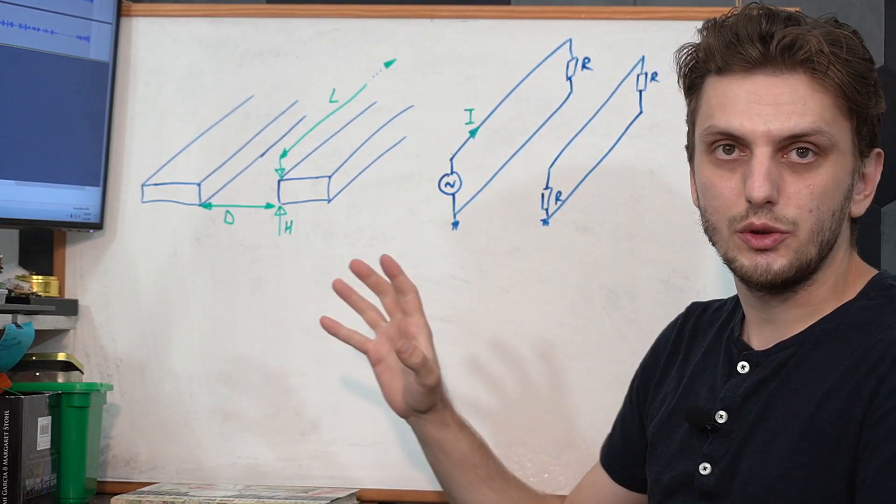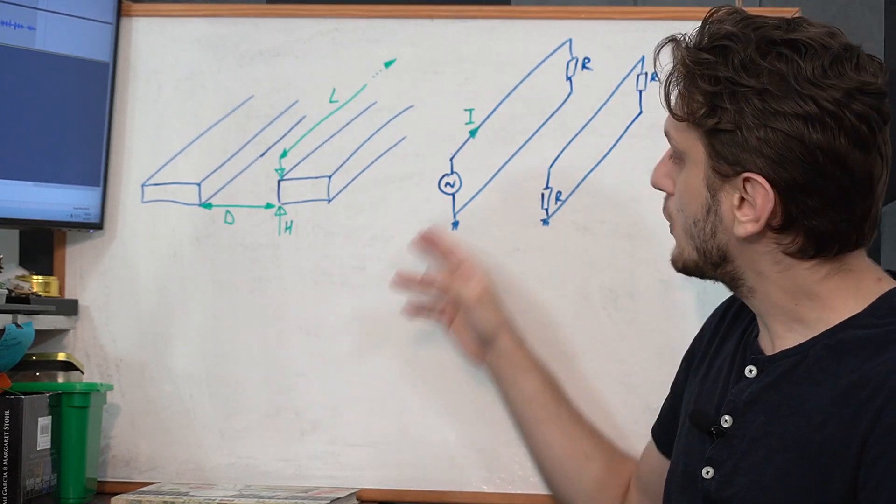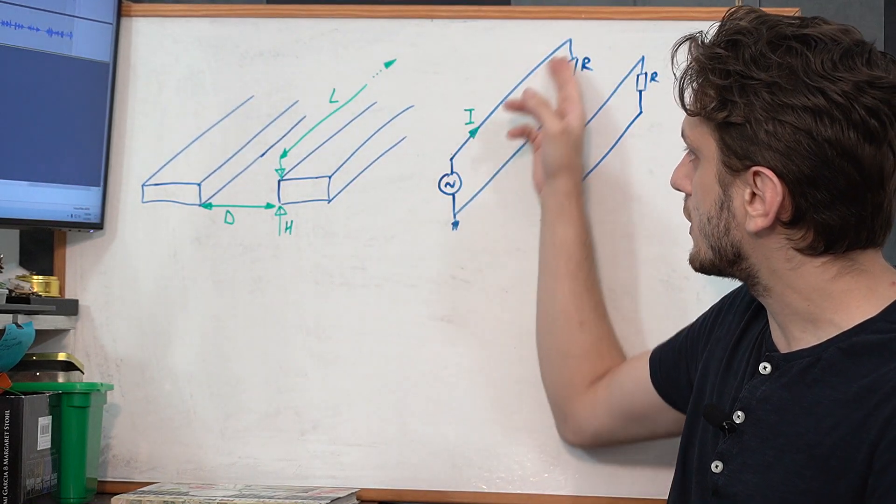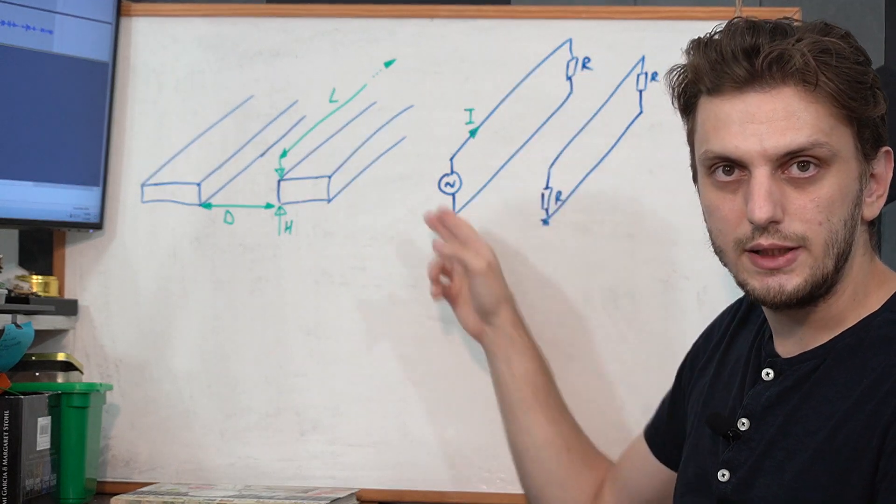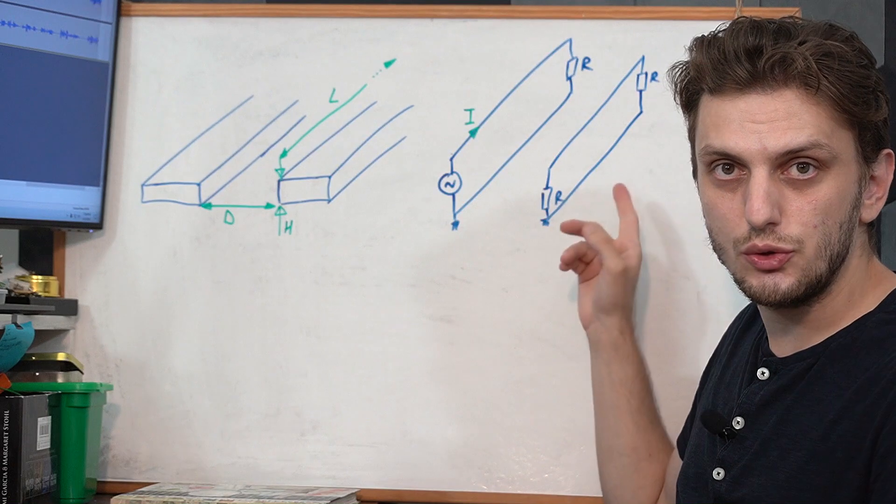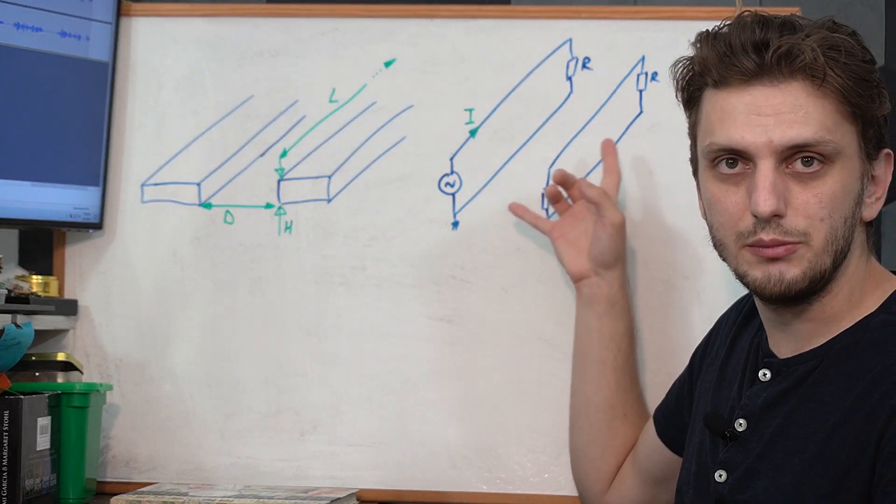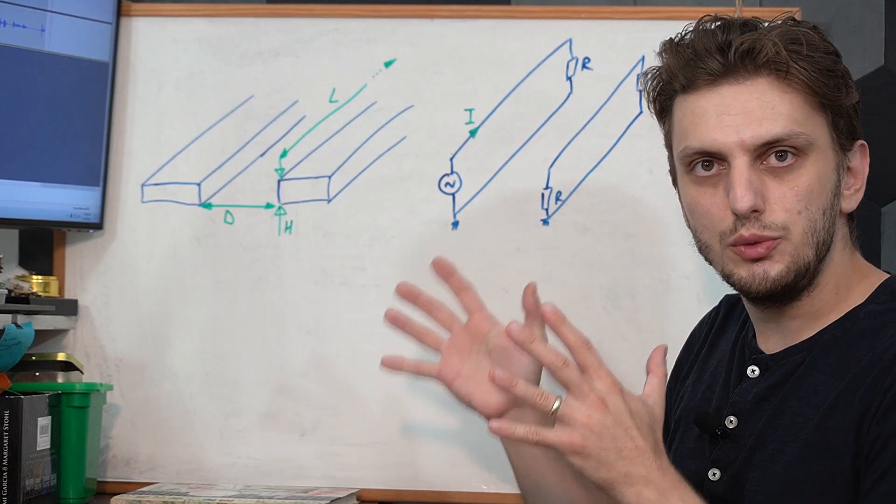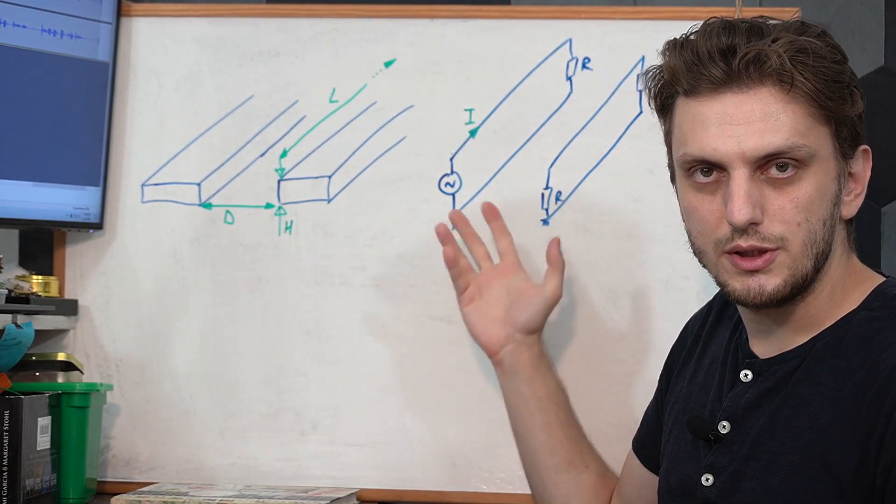Now we also have another phenomenon going on, so if we look at our traces in a different way, we have our signal source which is driving a current through the trace which terminates through a resistive load, and then back through the ground, and our other trace is also a loop which has only two resistors connected in between.